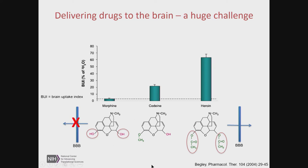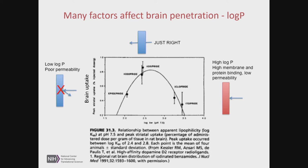Codeine is an example of an over-the-counter opioid receptor agonist with intermediate brain uptake, so it works. Basic physicochemical properties can regulate brain penetrance. On the previous slide with heroin, we said it was more lipophilic — it had a higher log P, the log of the partition coefficient. Looking at dopamine receptor agonists from a classic early-90s paper, there's almost an inverse parabolic relationship: as log P increases, brain penetrance increases. Around a log P of 2.5 is considered the optimal for a small molecule that you want to enter the brain. However, increase log P even higher and brain uptake is reduced again.